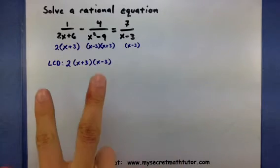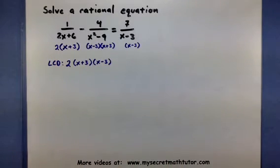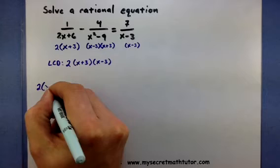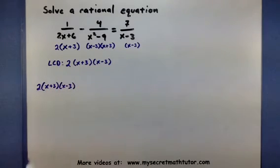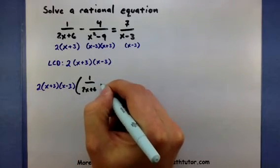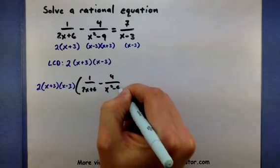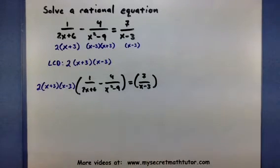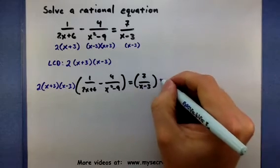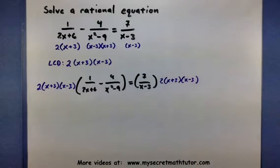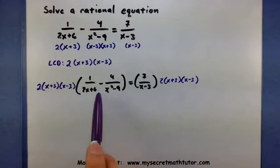And we want to take this and multiply it on both sides of our equation to wipe out those fractions. So I'm going to multiply it on the left side by 2 times x plus 3 times x minus 3. And I'll multiply it on the right side. At first this will look a little messy, but just follow along as best you can.